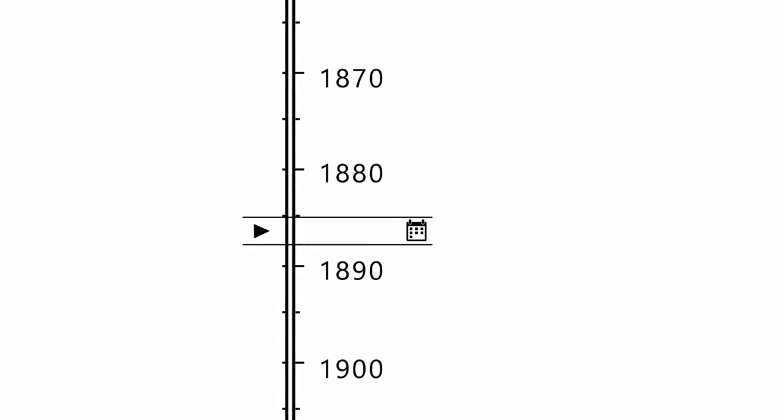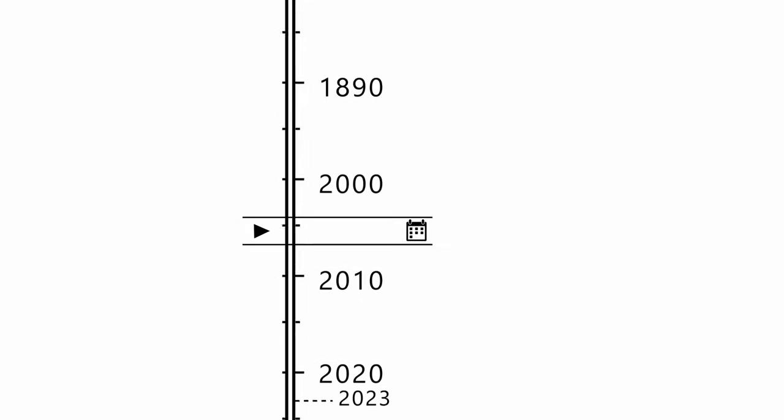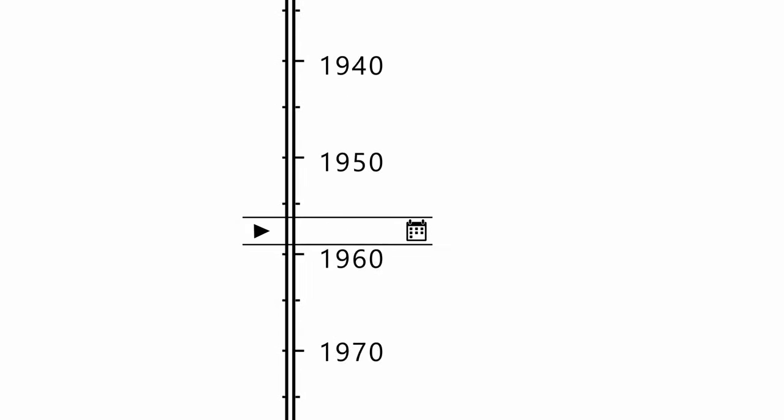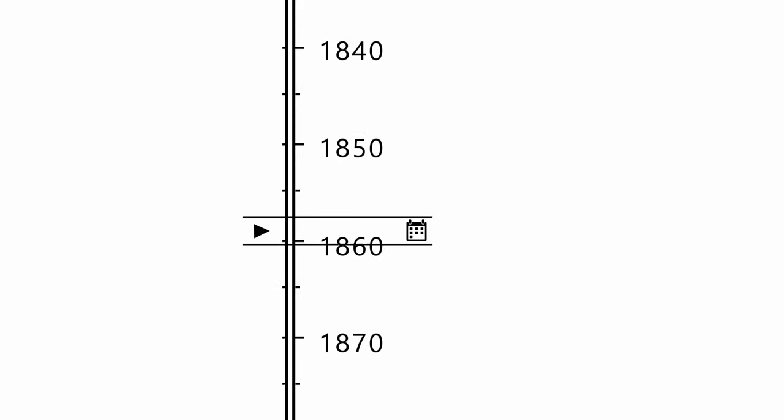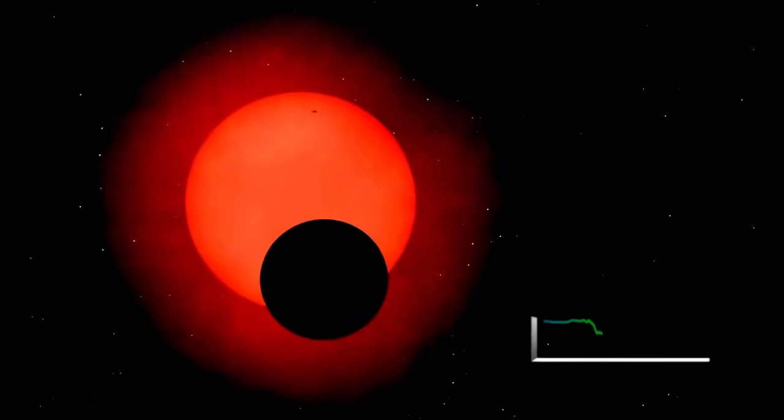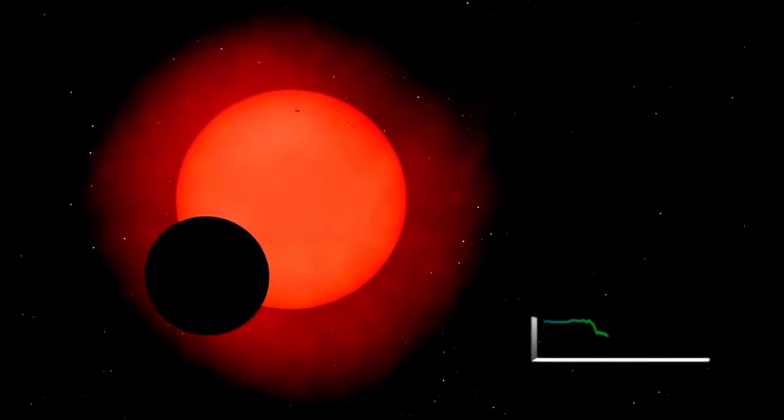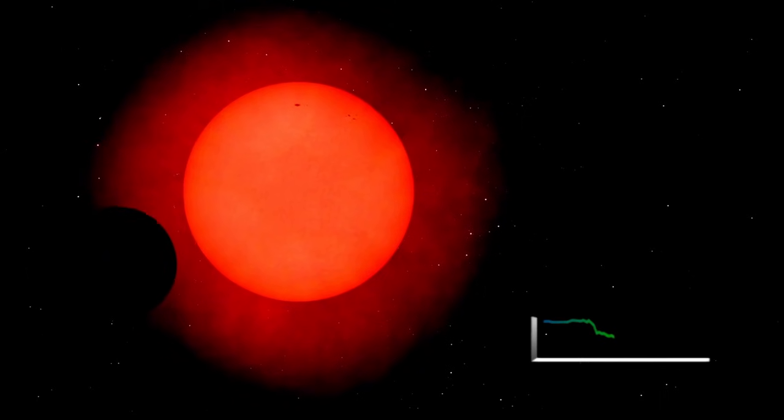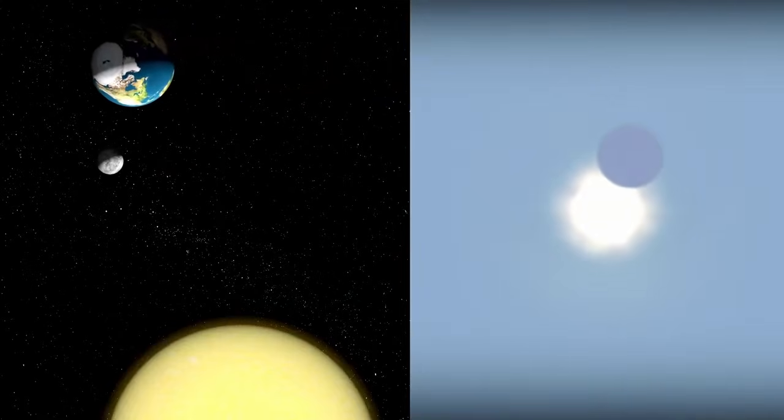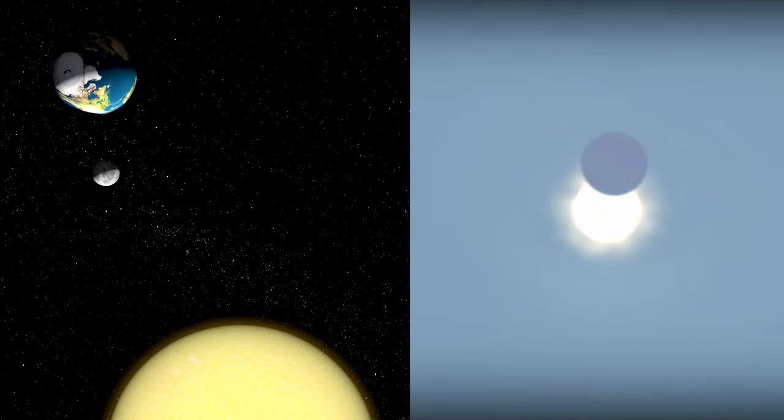To fully comprehend the enigma surrounding Betelgeuse, it is crucial to revisit the end of 2019 when peculiar phenomena began to manifest. During this period, the red supergiant star started experiencing significant dimming, a change noticeable even to the naked eye. Observations using the very large telescope in the optical spectrum revealed that Betelgeuse appeared roughly symmetrical, but its photospheric layers exhibited signs of a substantial disturbance within our line of sight.